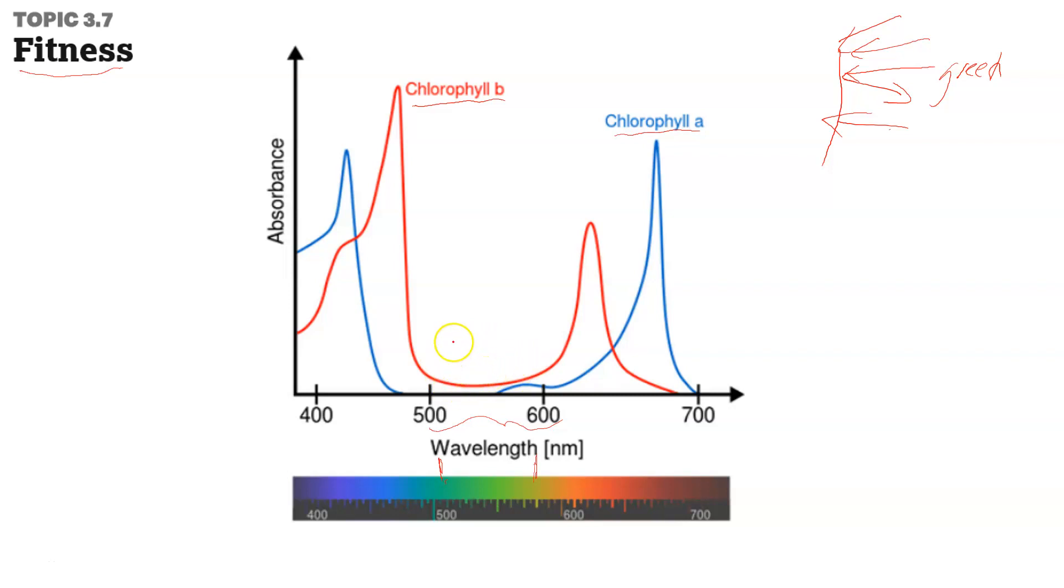They've kind of evolved this method, and people have wondered many different reasons why. Early ocean conditions probably had something to do with the wavelengths they had access to and favoring reflecting green light. But this also allows them to exploit multiple different wavelengths - not just chlorophyll B, you also have chlorophyll A.